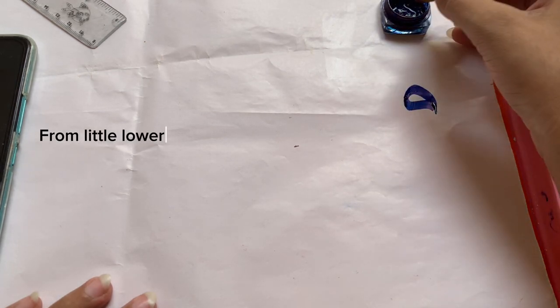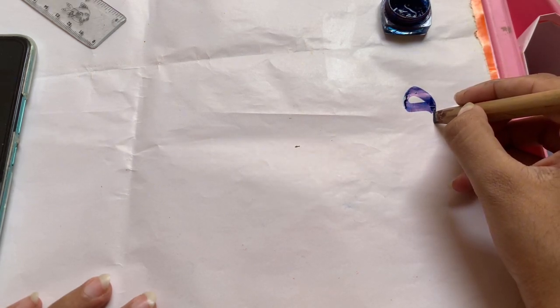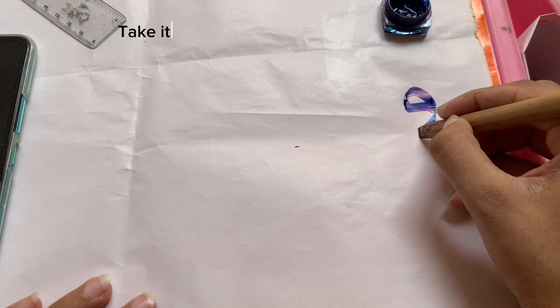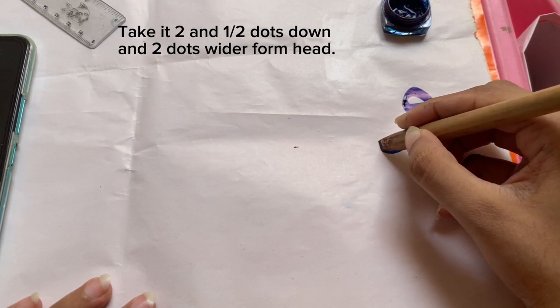From the lower part, start making the tail. Take it two and a half dots down and two dots wider from the head.